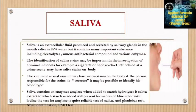Saliva is an extracellular fluid produced and secreted by salivary glands in the mouth. Saliva is 98% water but contains many important substances including electrolytes, mucus, antibacterial compounds, and various enzymes. The identification of saliva stains may be important in criminal investigations — for example, a cigarette or handkerchief left behind at a crime scene may have saliva stains. The victim of sexual assault may also have saliva stains on the body. If the person responsible is a secretor, it may be possible to identify their blood type.